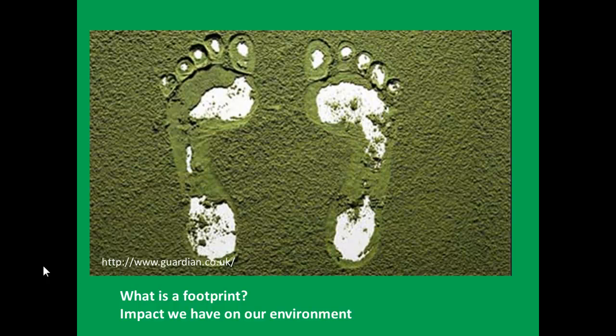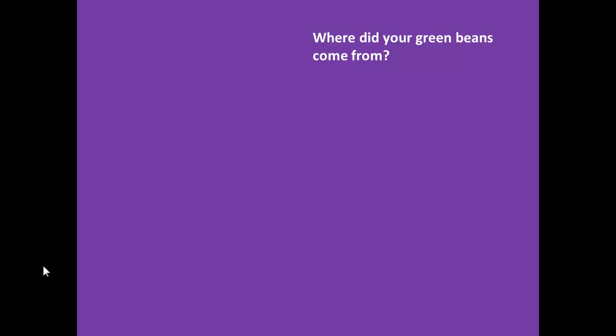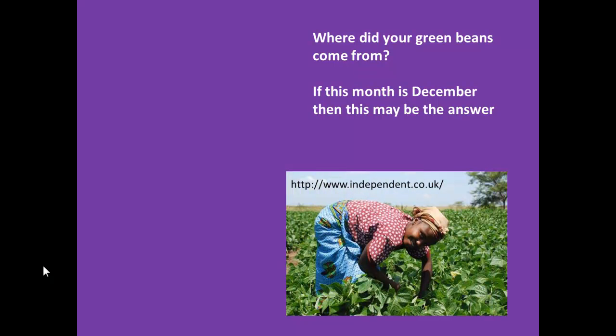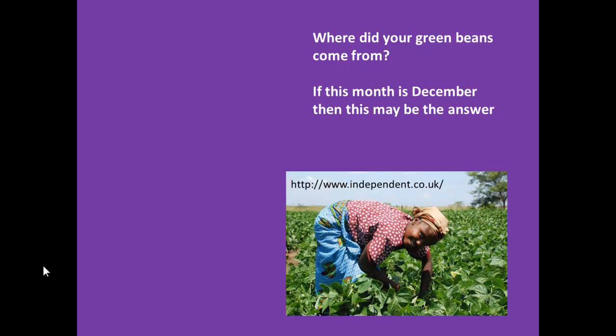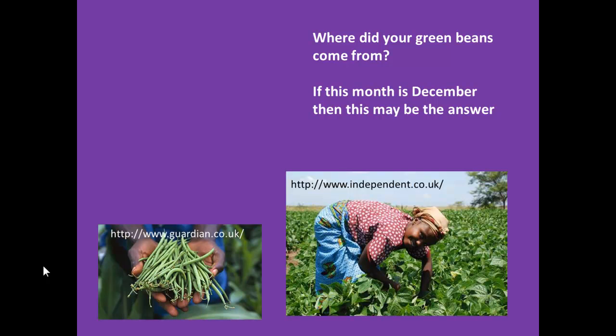So how easy is this to work out? We will start with a simple example. We have some green beans on our plate and we are about to eat them. Where did those green beans come from? Did you look at the time that you bought them? If you bought the beans at a supermarket in December then they probably came from overseas, maybe from a country like Kenya or Egypt or Morocco.